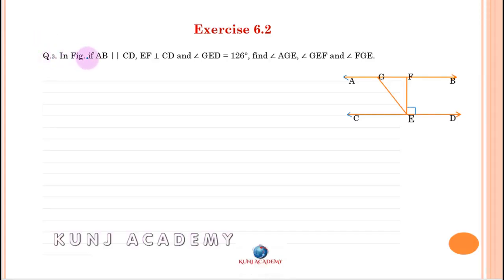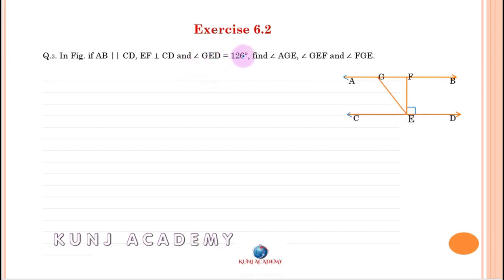Question: In the figure, if AB is parallel to CD, EF is perpendicular to CD, and angle GED is equal to 126 degrees, find angle AGE. This is the angle we have to find.